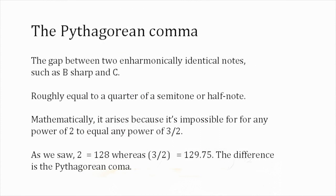This small gap or discrepancy between two enharmonically identical notes, such as B-sharp and C, is what's known as the Pythagorean comma. It's roughly equivalent to a quarter of a semitone or half note.